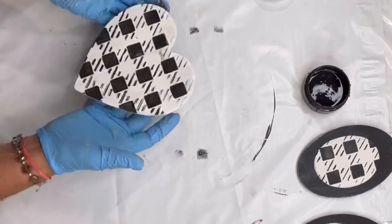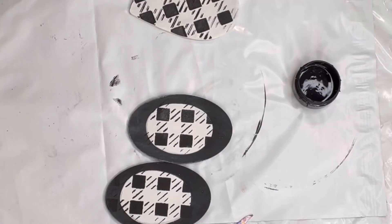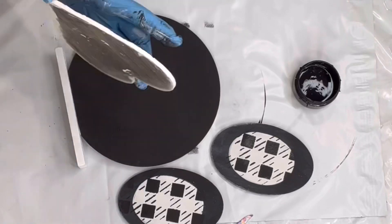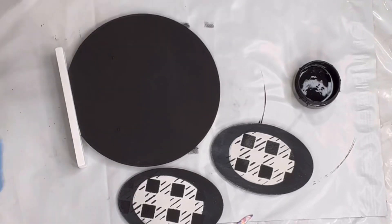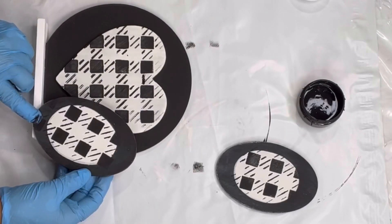Allow all this to dry. Once dry, I took my heart and glued it to the center of my circle plaque.